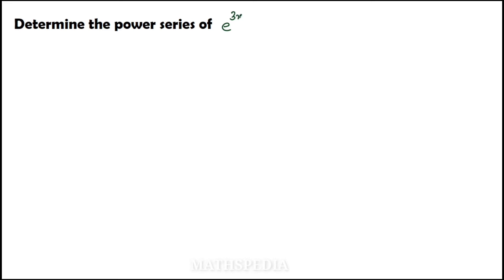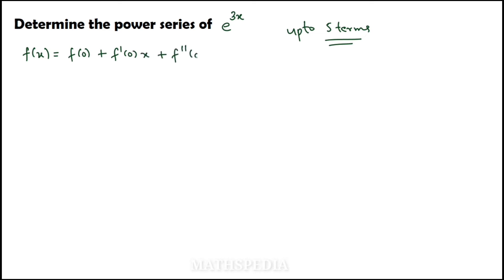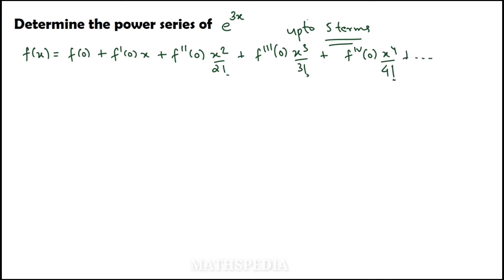In this video we are going to find out the power series of e^(3x) up to five terms. We are going to see how to find the Maclaurin series power series using the Maclaurin series formula. So let us write the formula first: f(x) = f(0) + f'(0)·x + f''(0)·x²/2! + f'''(0)·x³/3! + f''''(0)·x⁴/4! and so on. This is the Maclaurin series, and in this question they have asked for five terms.